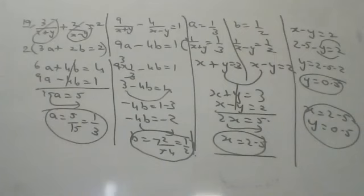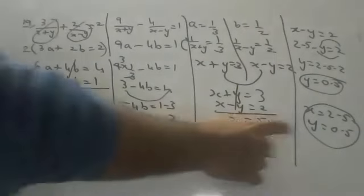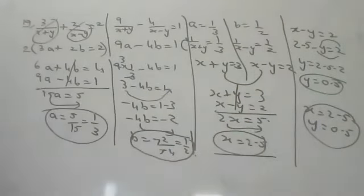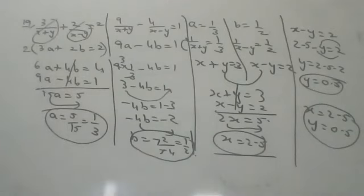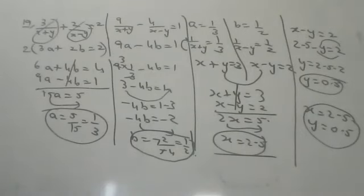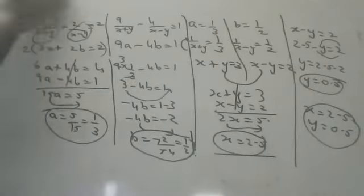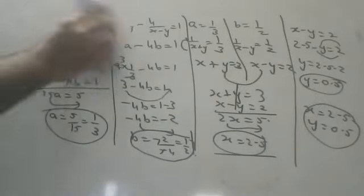So in this type of sum, you solve the linear equations by elimination twice — once for a and b, and once for x and y. Tomorrow I will start substitution and graphical methods.